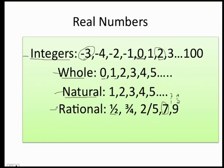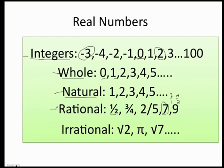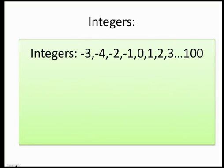Then we have irrational numbers such as the square root of 2, pi, and the square root of 7. These go on and on — for example, pi is 3.14 and just goes to infinity. The numbers we'll be dealing with most of the time on tests are integers, whole numbers, naturals, and rational numbers.